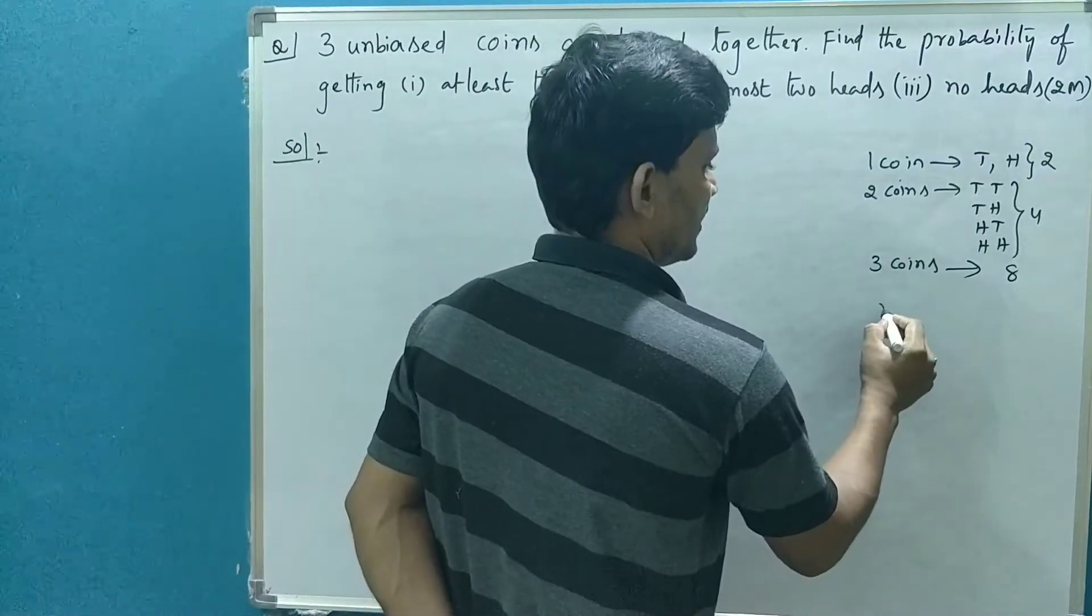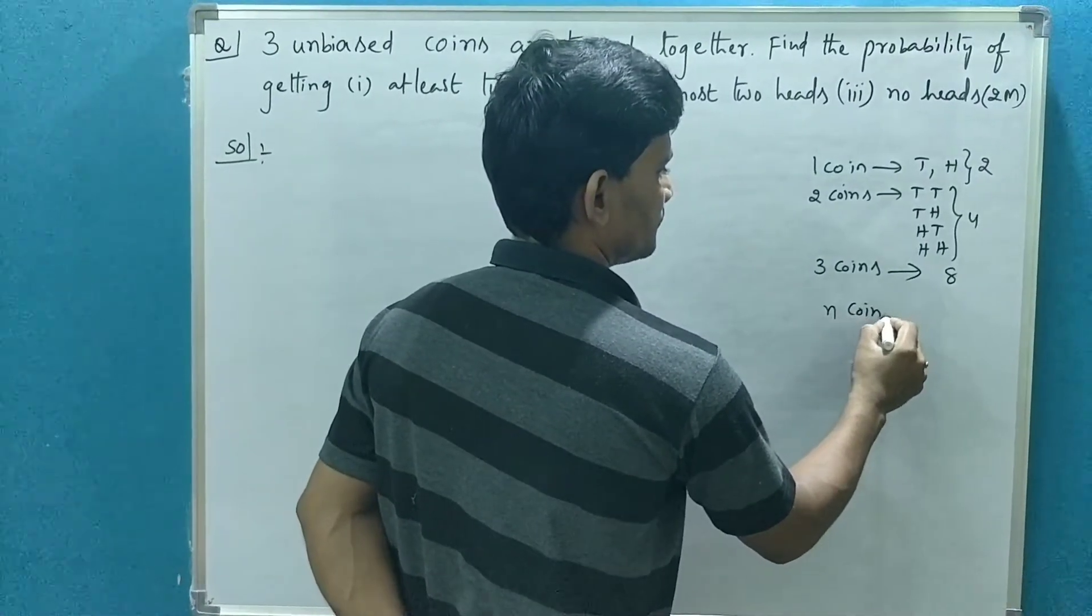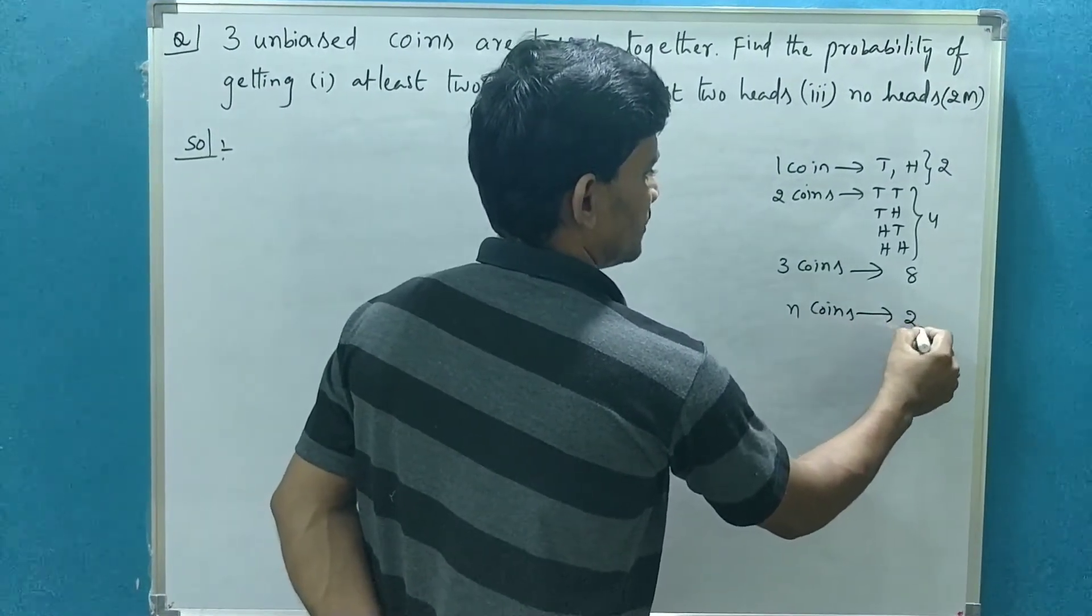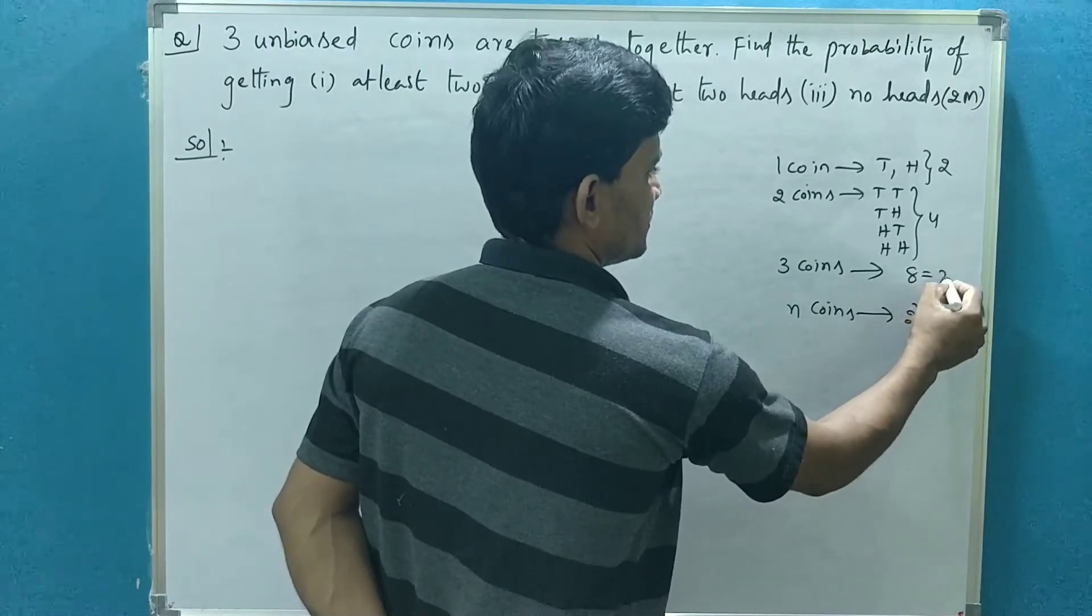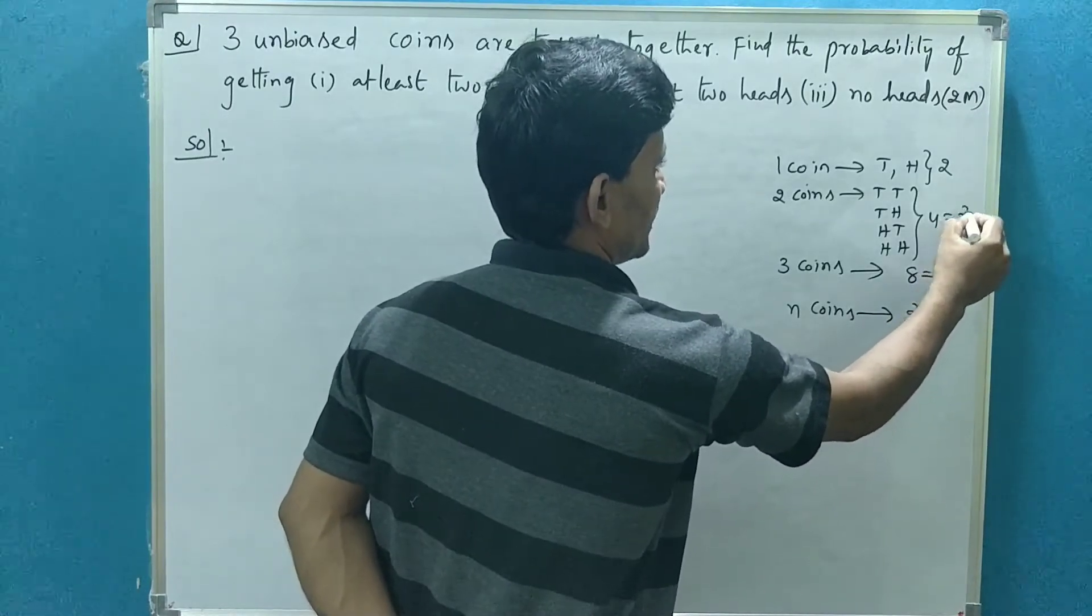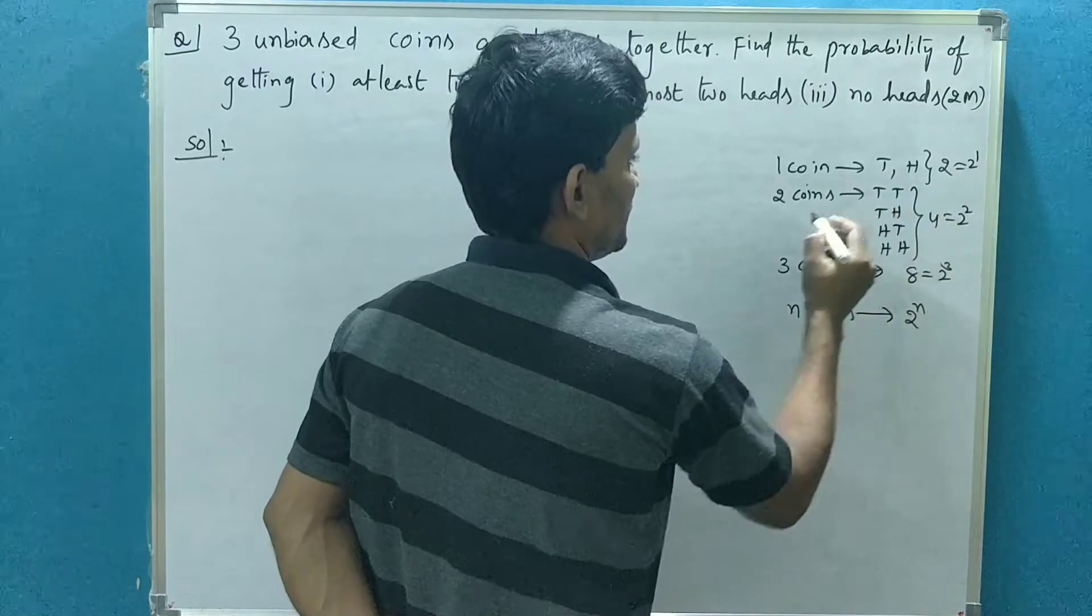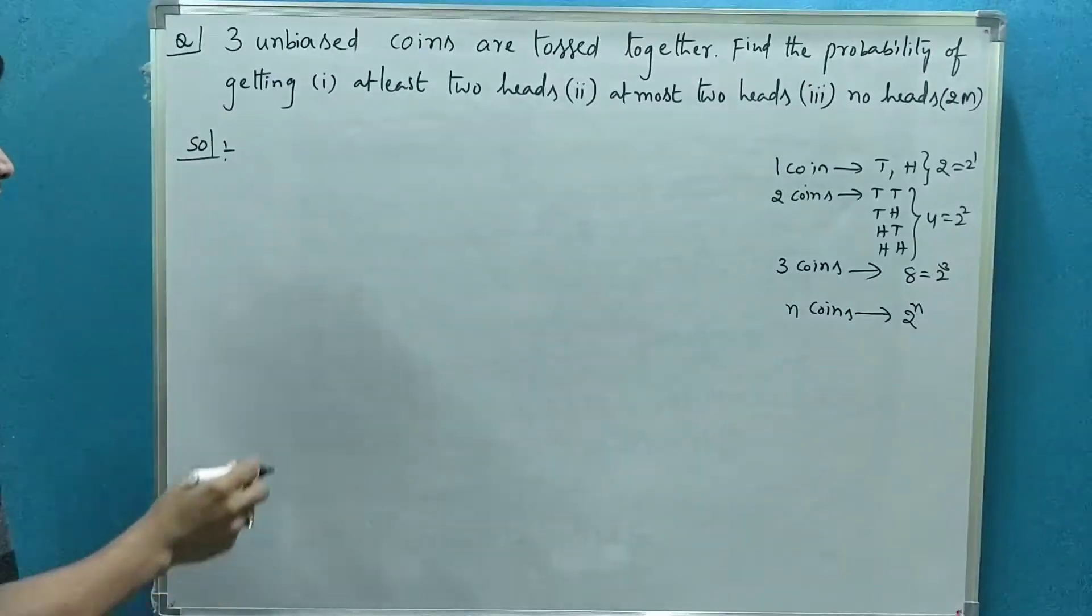In this case, if three coins are tossed together like this, you will have eight possibilities. In general, if n coins are tossed together, you will get 2 to the power of n. This is 2 cube, 2 square, 2 power one.